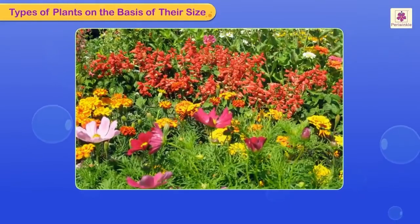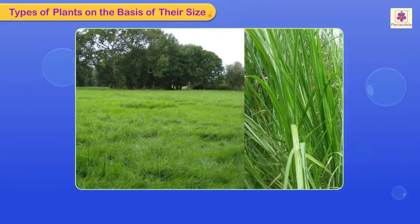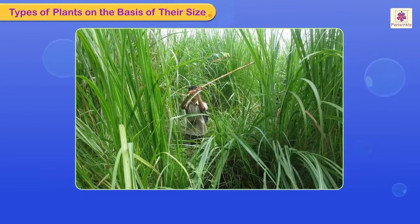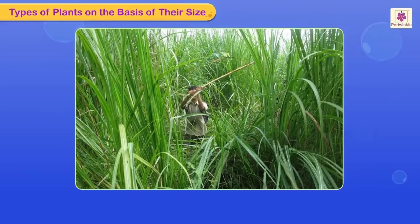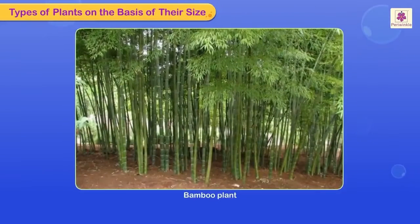Plants can be of different sizes. The green grass in the garden can also grow up to 30 meters high. The bamboo plant is one such example.